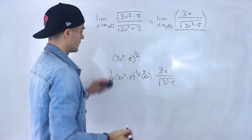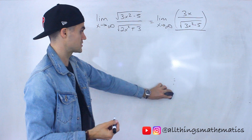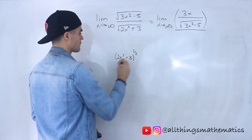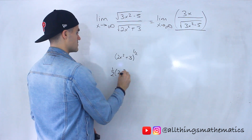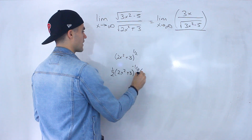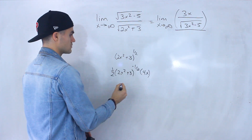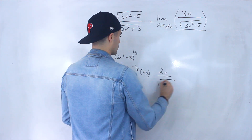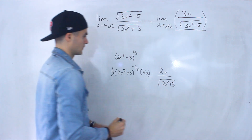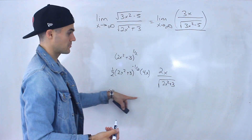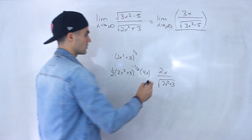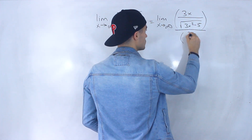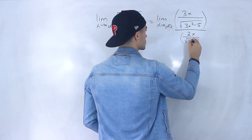Now we take the derivative of the denominator using the same chain rule process. We have 2x squared plus 3 to the power of one half. Bring the one half down, subtract 1 from the exponent, and multiply by 4x. Notice 4x over 2 simplifies to 2x. So this simplifies to 2x over the square root of 2x squared plus 3. That's the derivative of the denominator.